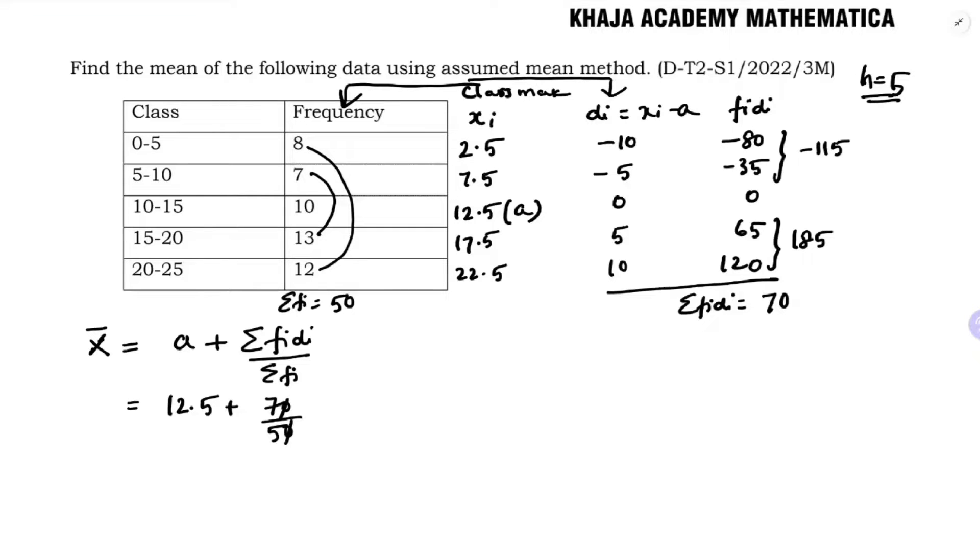70 by 50 is 7 by 5. So the answer is mean equals 12.5 plus 7 by 5. This is 12.5 plus 1.4, which is 13.9. So the mean of the following data is 13.9.